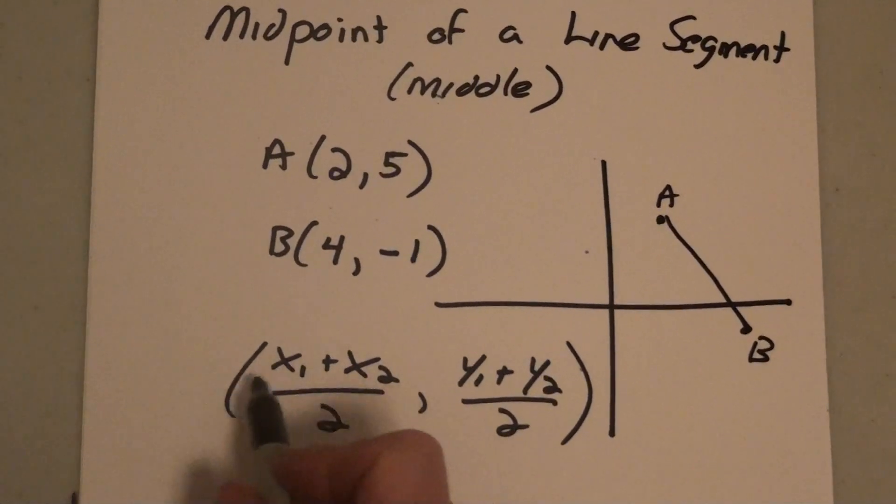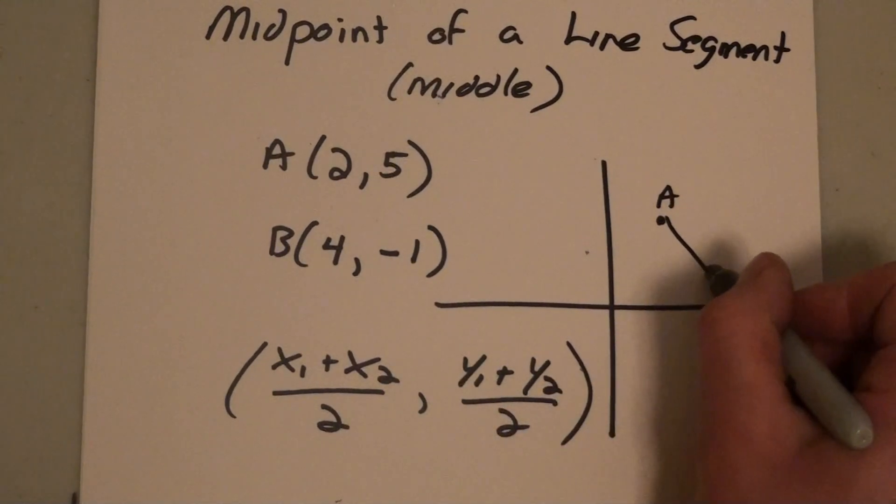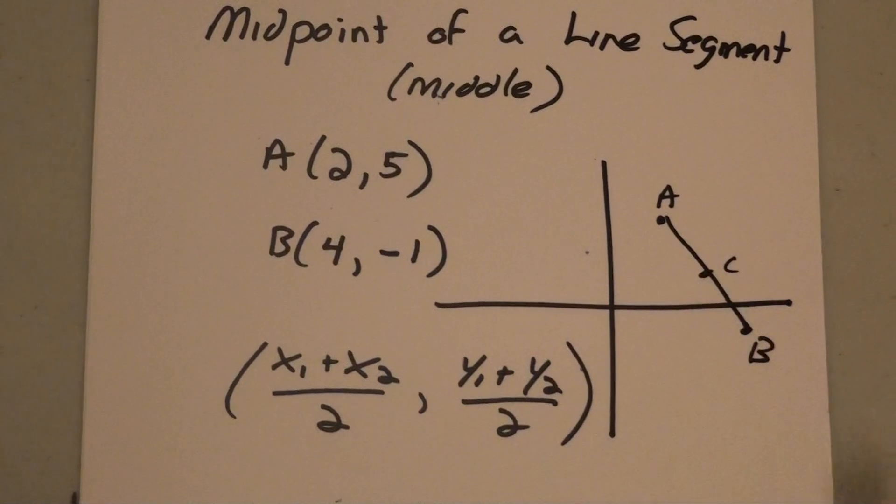The midpoint is in the middle, so it makes sense you're going to add your x values divided by 2 and add your y values and divide by 2, and that will give you where the middle, let's call it point C, is.